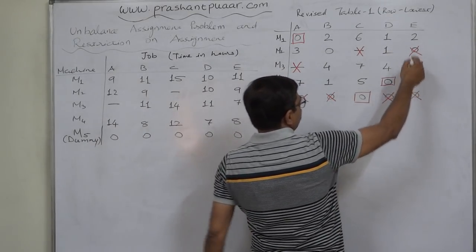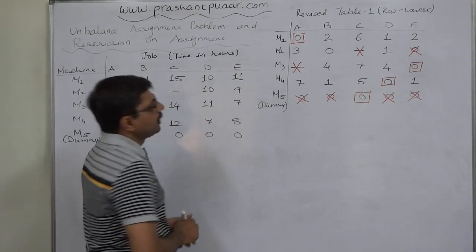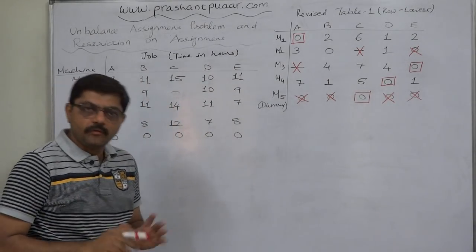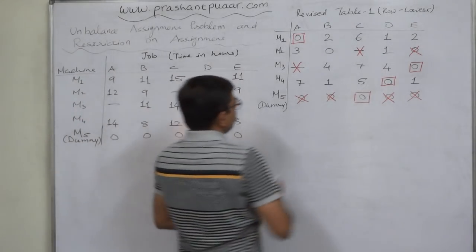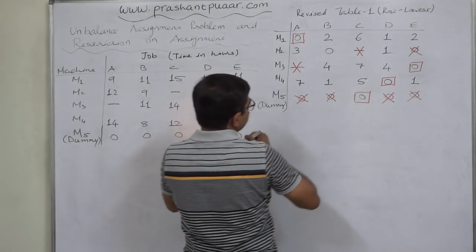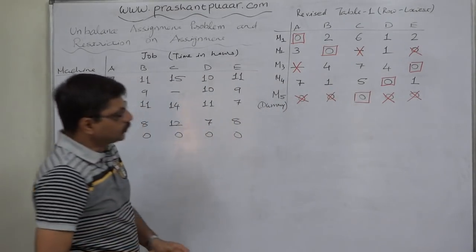In D, assignment have already been done. In E, assignment has already been done. Now, what? Now, again it is turn of row with single zero after cancellation. Only one row. M2 is with that type of zero. So we have to make assignment to M2.